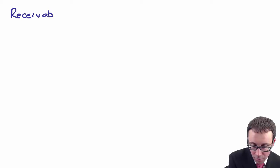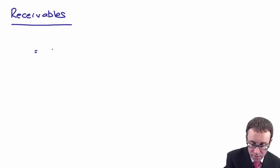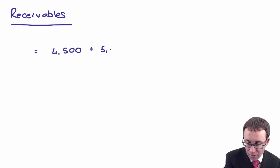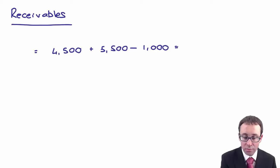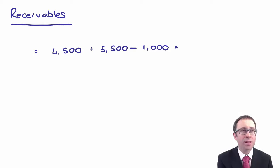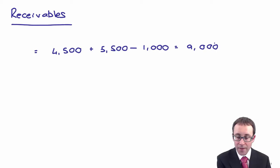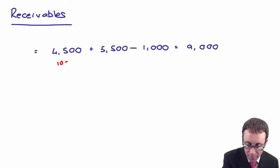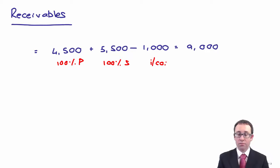If you were to get something like this in the exam and you were trying to spot the easier question, the receivables will probably be the easiest to deal with, because it's just 100% of the parent plus 100% of the subsidiary. So that's 4,500 for the parent and 5,500 for the subsidiary, giving 10,000. Then we deduct the 1 million intra-company balance, which gives us 9,000. To summarise: 100% of the parent, 100% of the sub, then your intra-company balance adjustment.